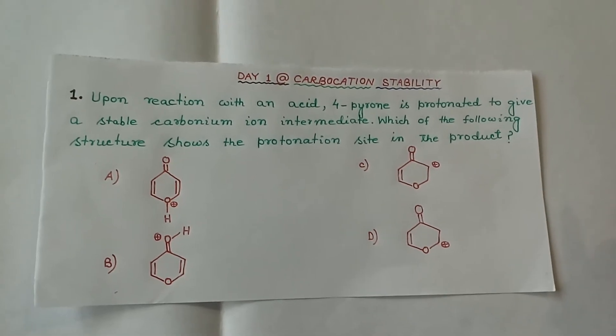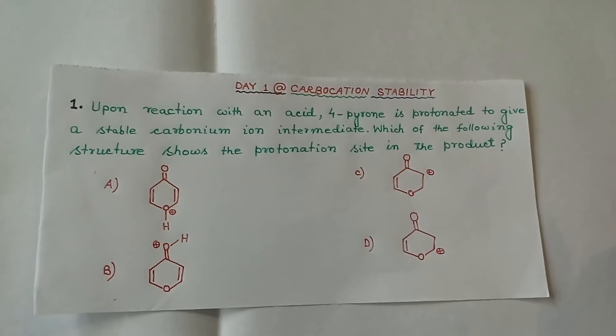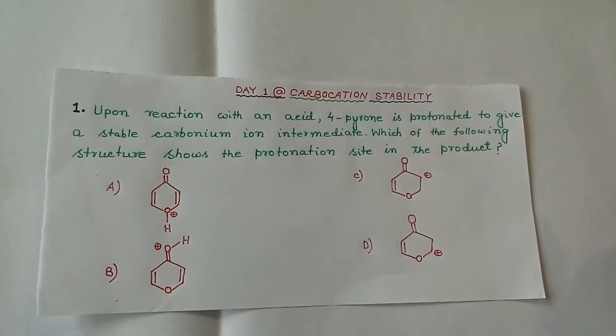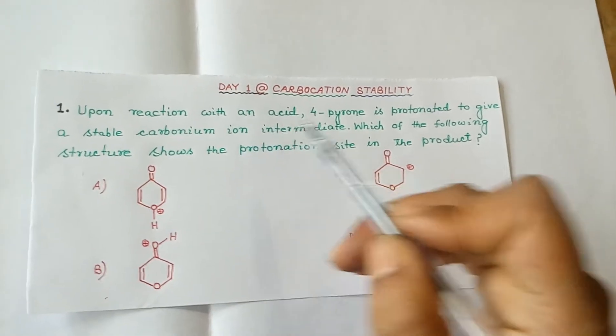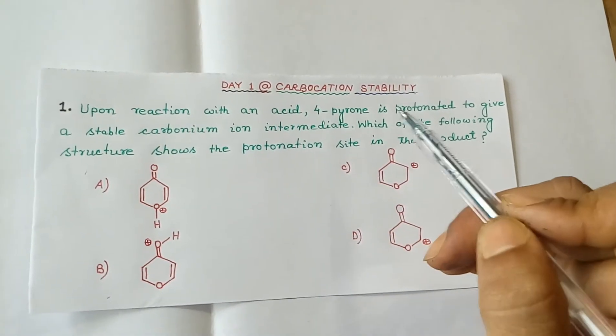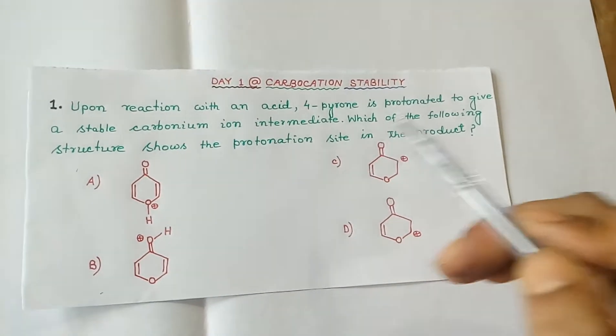Hello friends, welcome to More Chemistry. Today we are going to solve an MCQ question based on carbocation stability. Upon reaction with an acid, 4-pyrone is protonated to give a stable carbonium ion intermediate. Which of the following structure shows the protonation site in the product?